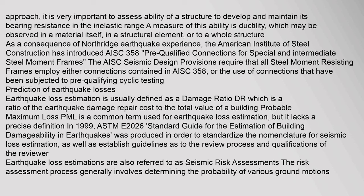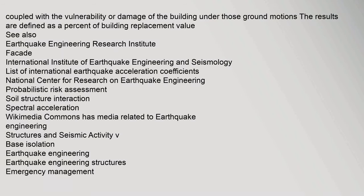Earthquake loss estimation is usually defined as a damage ratio, which is the ratio of earthquake damage repair cost to the total value of a building. Probable maximum loss (PML) is a common term used for earthquake loss estimation. In 1999, ASTM E2026 standard guide for the estimation of building damage ability in earthquakes was produced to standardize the nomenclature for seismic loss estimation and establish guidelines for the review process. Earthquake loss estimations are also referred to as seismic risk assessments, generally involving determining the probability of various ground motions coupled with the vulnerability of the building.